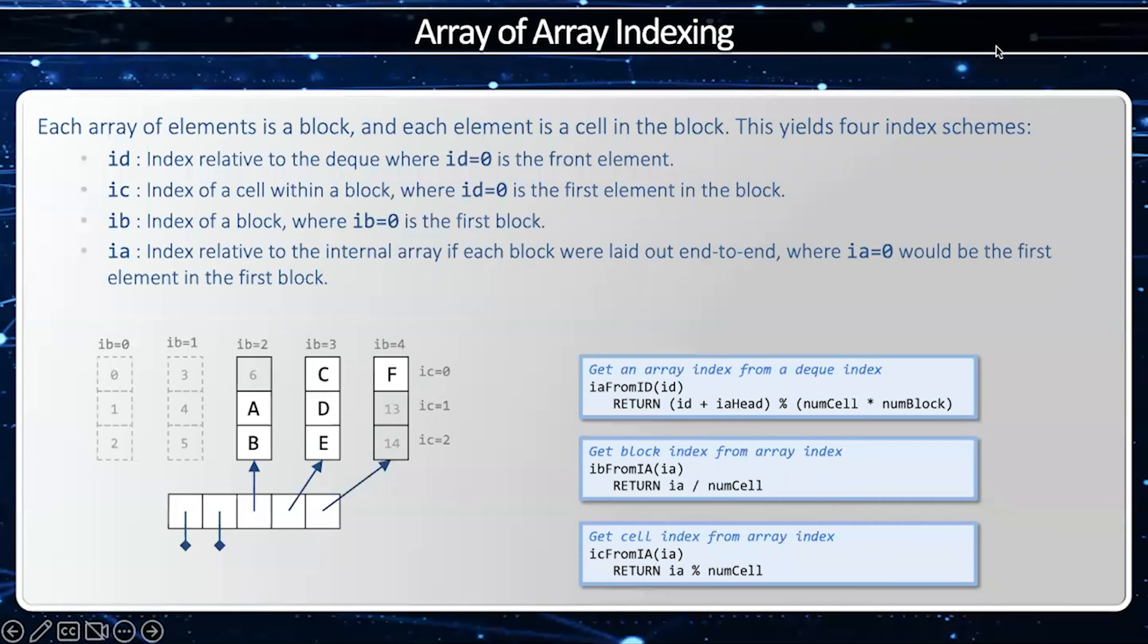The wrapping array implementation utilizes four separate indices. The first one, deque index ID, the second one, the cell index IC, the third one, the block index IB, and the fourth one, the array index IA.